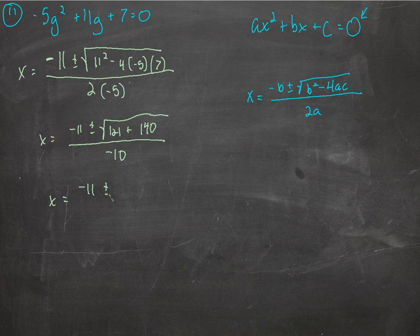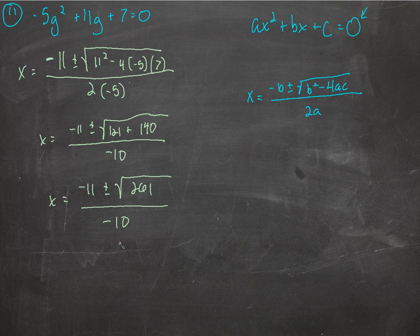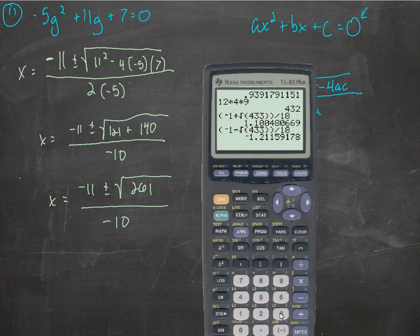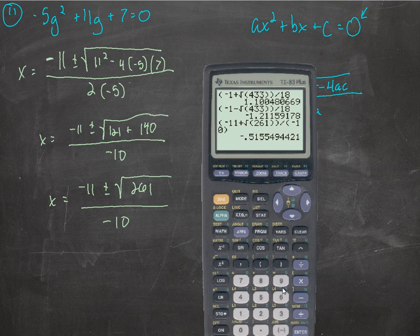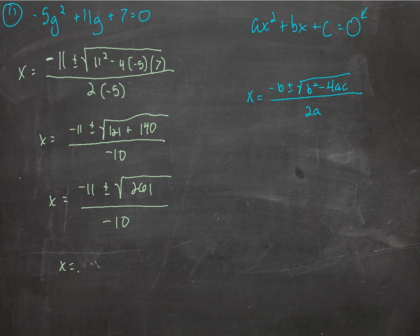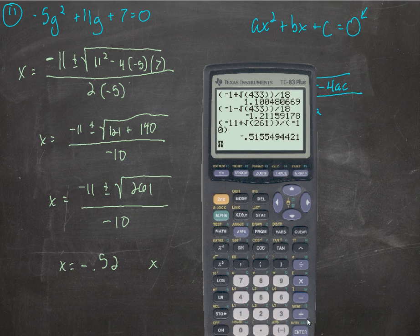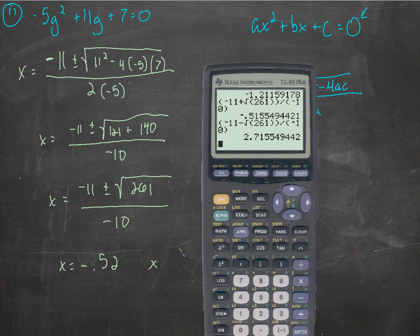x equals negative 11 plus or minus the square root of 261, all over negative 10. Now we can grab our calculator. Put parentheses here: negative 11 plus the square root of 261, parentheses around there, divided by negative 10: negative 0.52. What if we subtract that square root instead of add it? We'll bring that back up and subtract instead of add: 2.72.